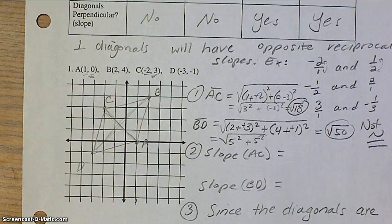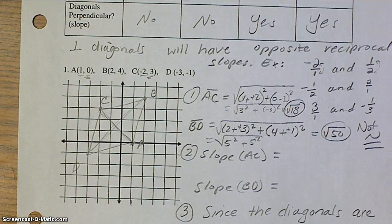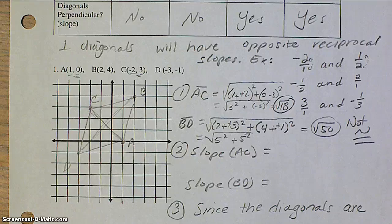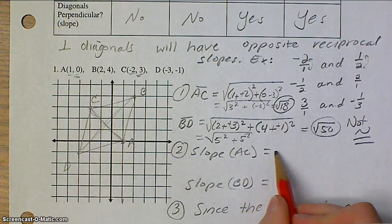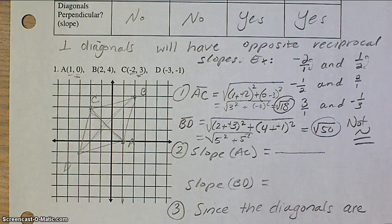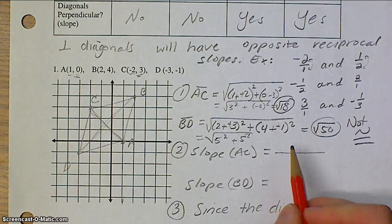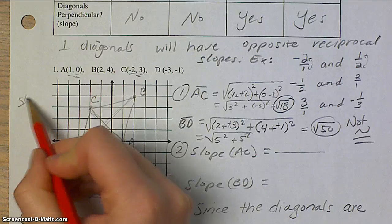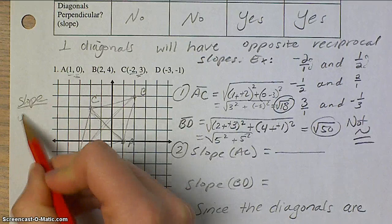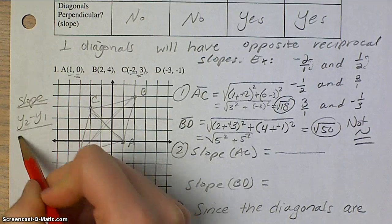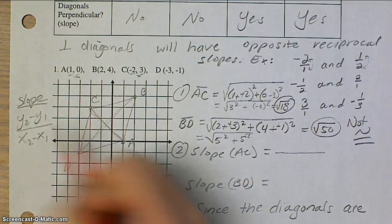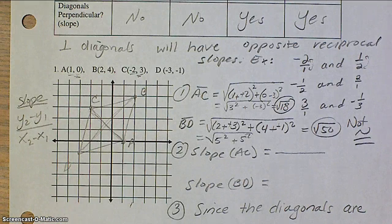Now I need to calculate my slopes to see if maybe the slopes cause them to have perpendicular diagonals. I'm going to calculate the slopes because you won't always have a picture. So, remember the slope formula: y2 minus y1 over x2 minus x1.